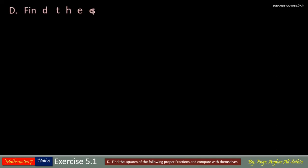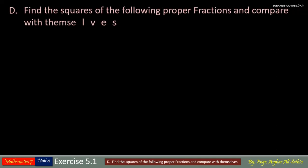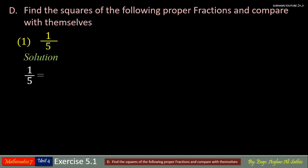Question D of exercise 5.1 says: find the square of the following proper fractions and compare with the answer. Problem number 1: 1 upon 5. Let us find the square of 1 upon 5 by squaring it and solving it — you will get 1 upon 25.